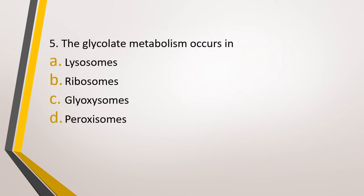Question number 5. The glycolate metabolism occurs in? Option A: Lysosomes. Option B: Ribosomes. Option C: Glyoxosomes. Option D: Peroxisomes. The correct answer is Option D — peroxisomes.